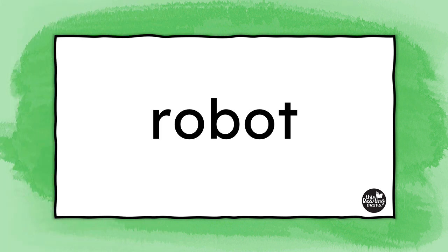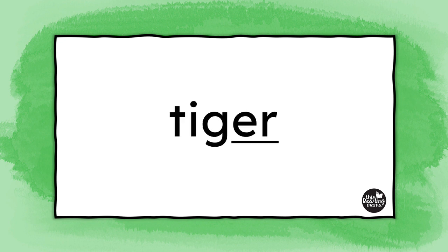Once learners grasp the idea of finding the open first syllable and the closed second syllable, you can use that familiar ER pattern on the end of words in your second syllable, like in this word. Ask them to first find the vowels — they can highlight, circle, or label them. I'm using V again. Next, ask them to look in between the vowels for the consonants. Again, we have one consonant. We have a V-C-V pattern, and the middle consonant — that G — is usually going to go with the second syllable.